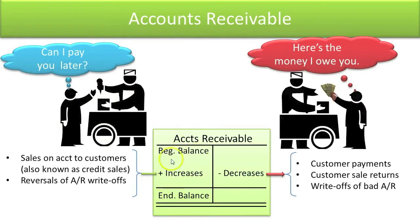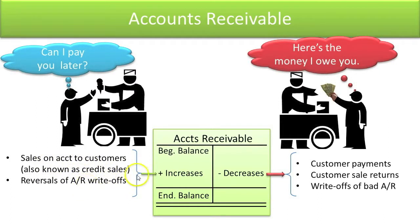Your accounts receivable account will increase when you make sales on account to customers. These are known as credit sales. It may also increase if maybe in the past you wrote it off thinking you'd never collect, but then all of a sudden you realize you would — so you'd increase it and then finally collect.